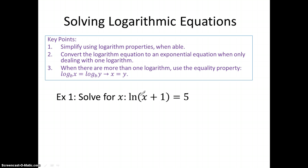Let's look at the first example. Solve for x: ln of (x + 1) is equal to 5. In order to do this problem, we're going to convert this, since we only have one logarithm equal to a number. We want to convert it to an exponential equation. Remember that ln is really log base e, so log base e of (x + 1) equals 5. You don't have to write this step if you always remember that ln is log base e.